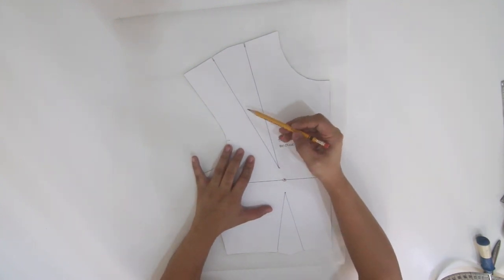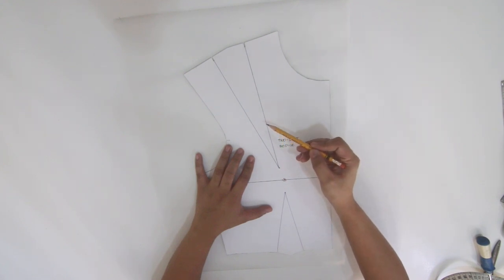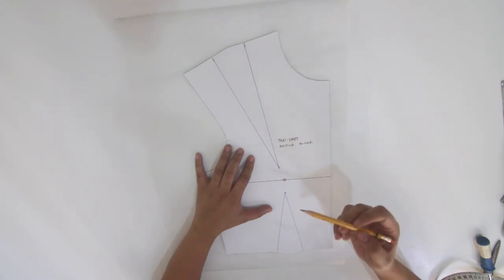Place the block on top of the pattern paper. This shoulder dart will be eliminated and gets absorbed by the waist dart.